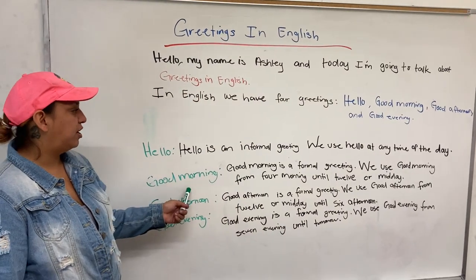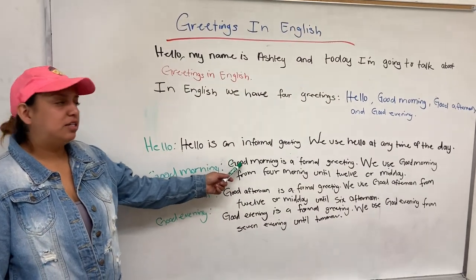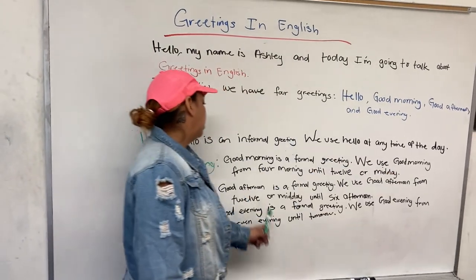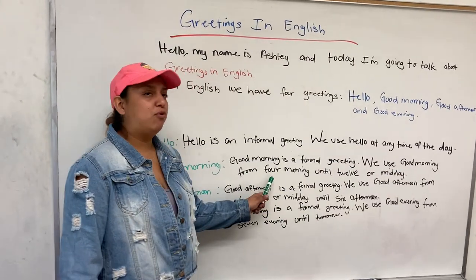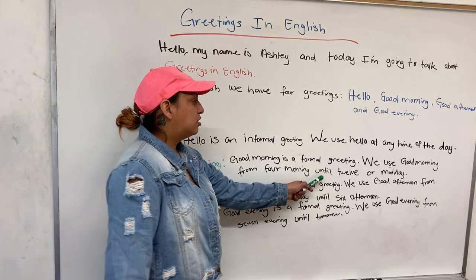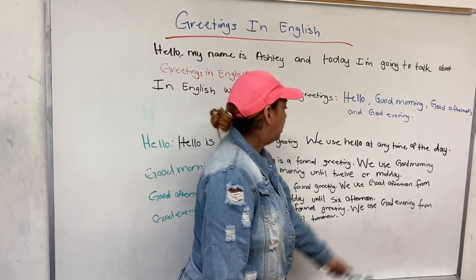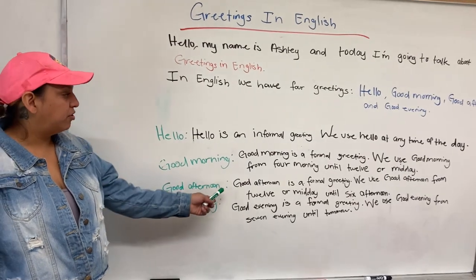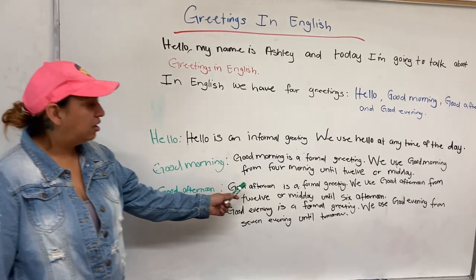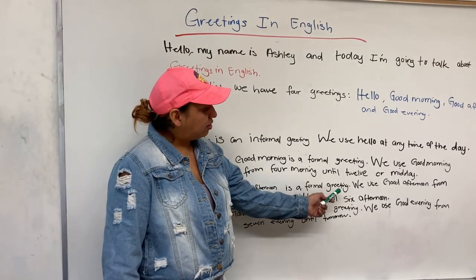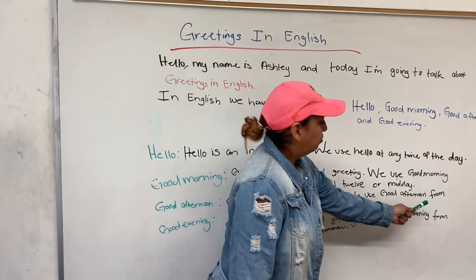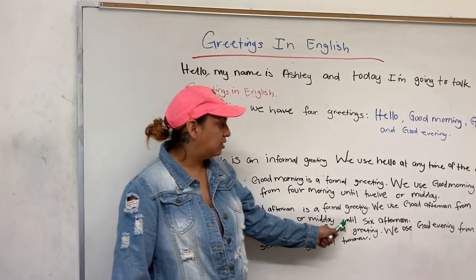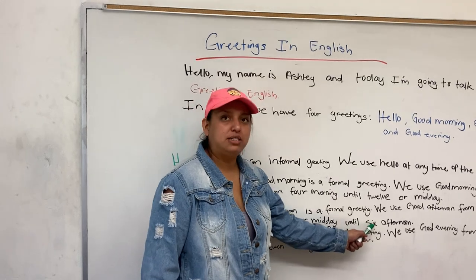Good morning — good morning is a formal greeting. We use good morning from 4 in the morning until 12 or midday. Good afternoon — good afternoon is a formal greeting. We use good afternoon from 12 or midday until 6 in the afternoon.